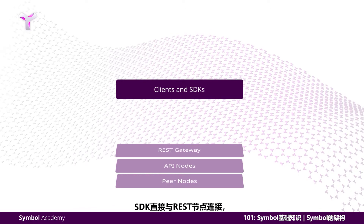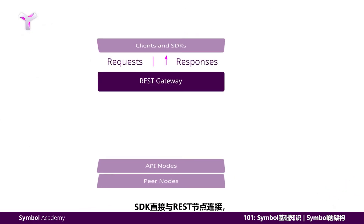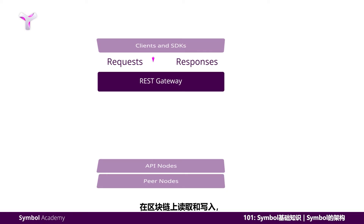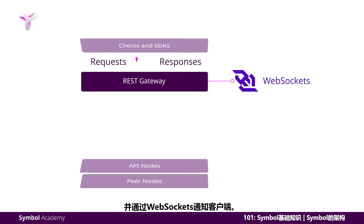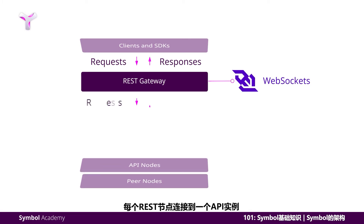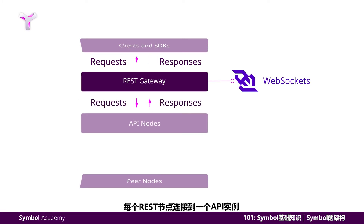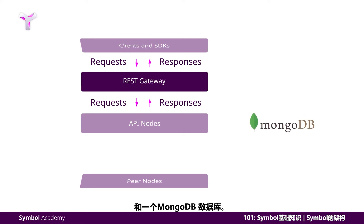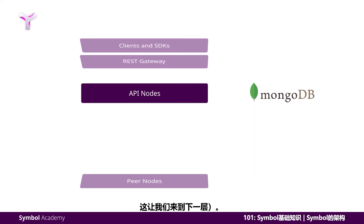The SDK connects directly with the REST node, which makes up the next tier. REST nodes take the requests from the clients, read and write on the blockchain, and notify the clients via WebSockets. This tier exposes all the features available through a RESTful API contract. Each REST node connects to one API instance and a MongoDB database.